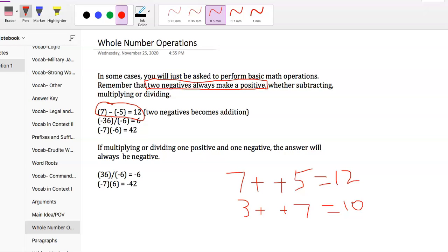The second one, right below 7 minus negative 5, says negative 36 divided by negative 6 equals 6. You can see that - I'll circle it. So we have negative 36 divided by negative 6.